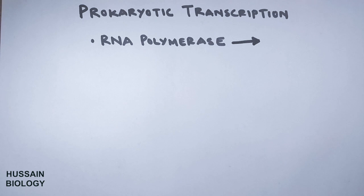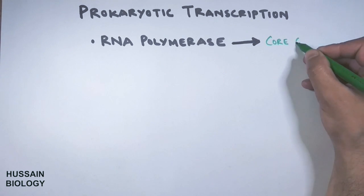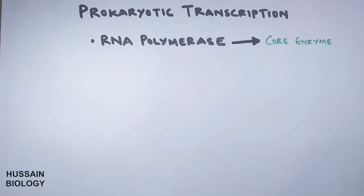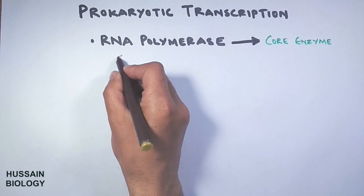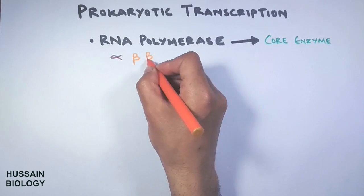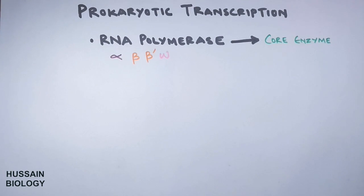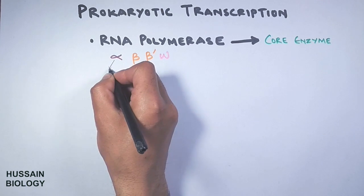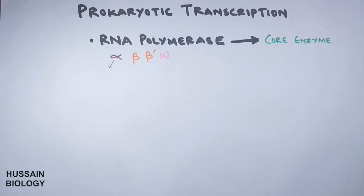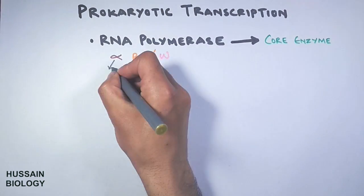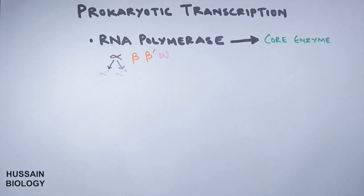The RNA polymerase is a core enzyme which has different subunits. It has got alpha, beta, beta prime, and omega subunits. The alpha subunit is further divided into two subunits: alpha 1 and alpha 2.